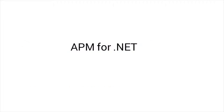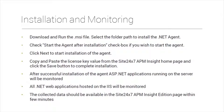For APM for .NET, run the installer to install the .NET agent. During installation, you'll be prompted to check a box to start the agent after installation, and you can enter your license key. After successful installation, all .NET web applications hosted in IIS will be automatically discovered, added for monitoring, and the collected data will appear in the Site247 dashboard within a few minutes.